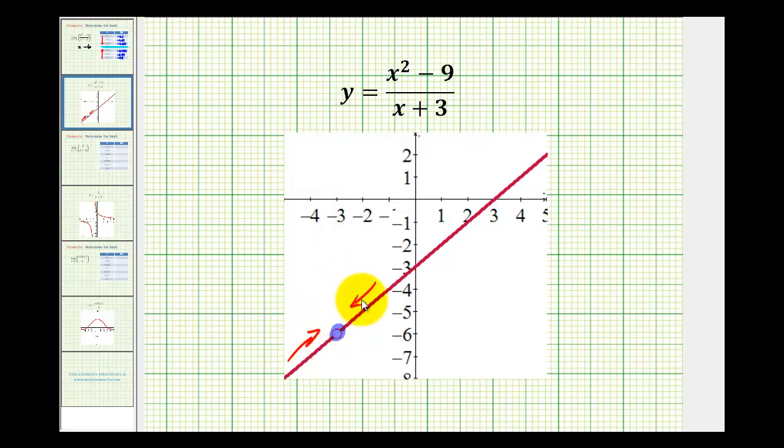As we approach from the left, and as we approach from the right, we're approaching the function value where this hole would be, which you can see would be equal to negative six.